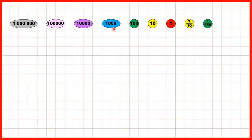Here we have some place value counters, and these can help us to understand how our number system works. First we have one million counter.